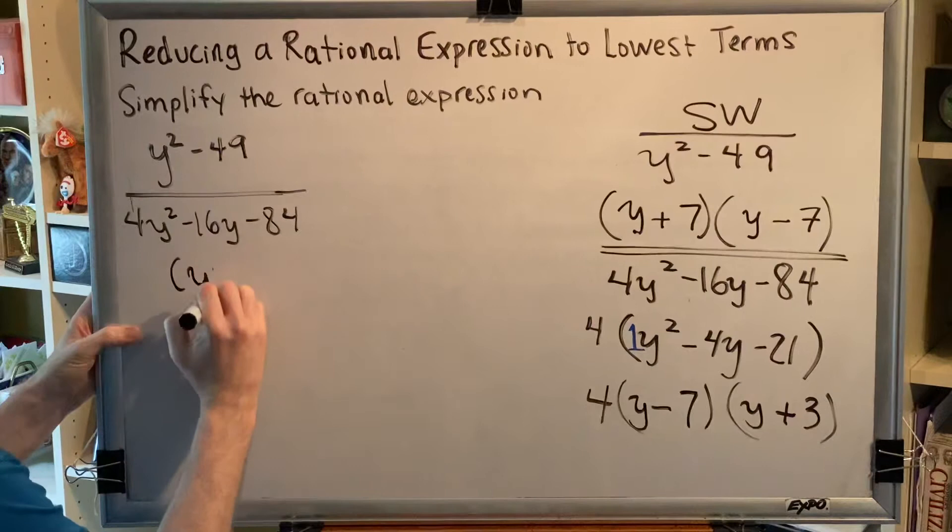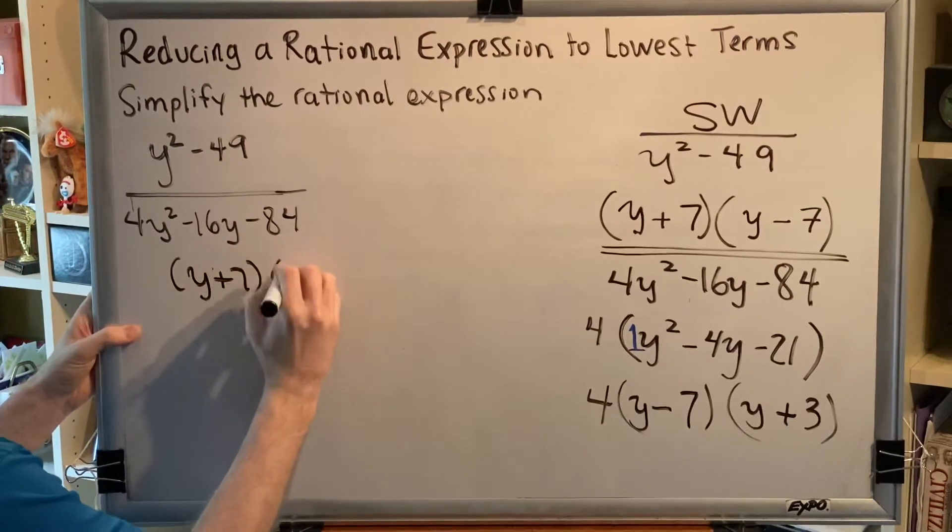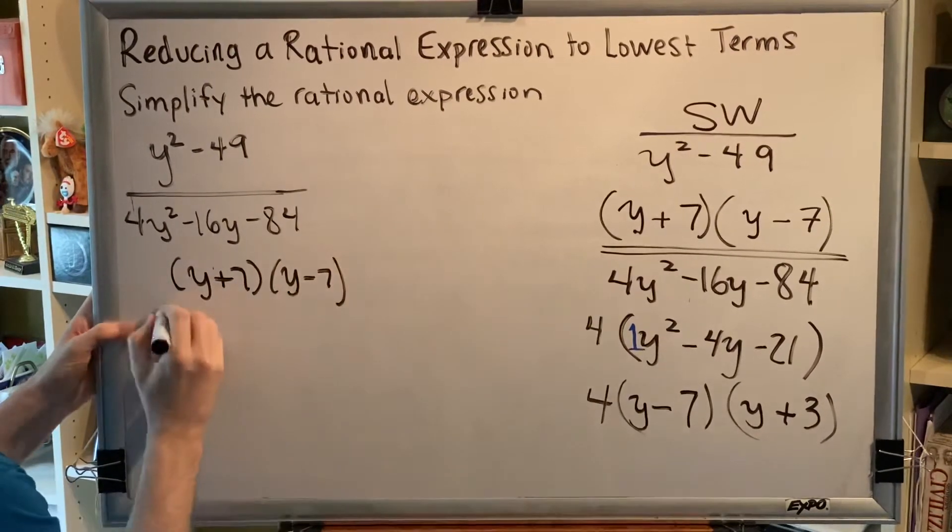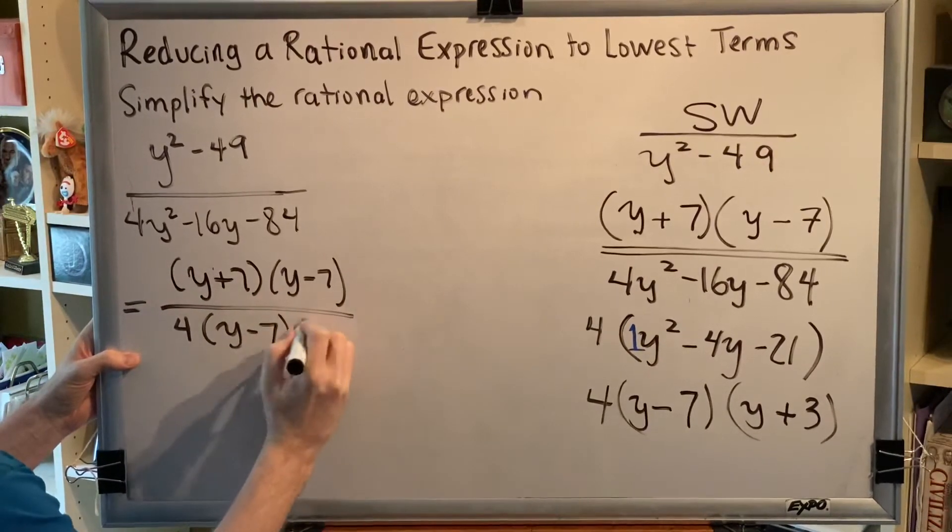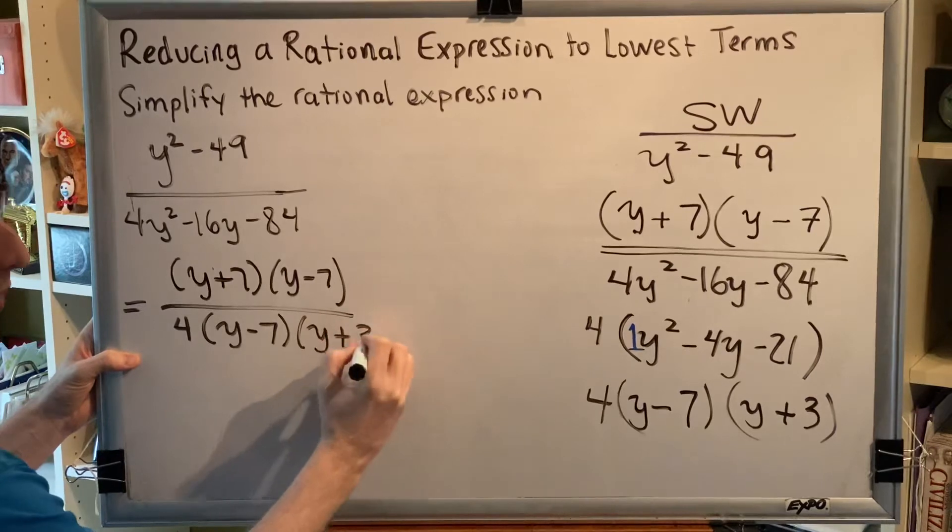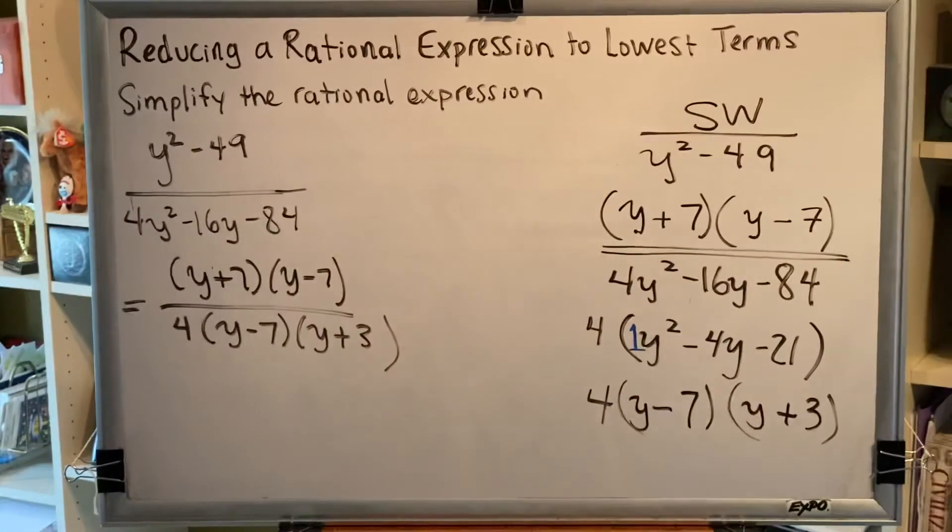Down below, we're going to write the 4 times the y minus 7 times the y plus 3. So now we're ready to do step 2.